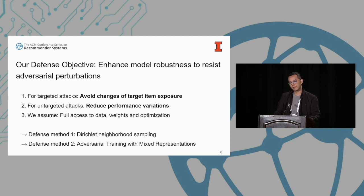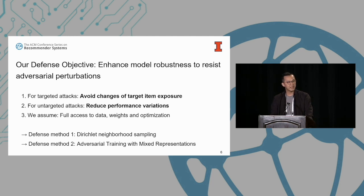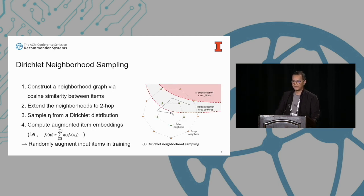Now we'll talk about our defense objective. The defense objective is to enhance model robustness to resist against perturbations. For targeted attacks, we want to avoid changes in target item exposure. For untargeted attacks, we want the performance of our sequential recommenders to stay stable. We assume full access to the data, model weights, and optimization process during training. We propose two methods: Dirichlet Neighborhood Distribution Sampling and FSL training.